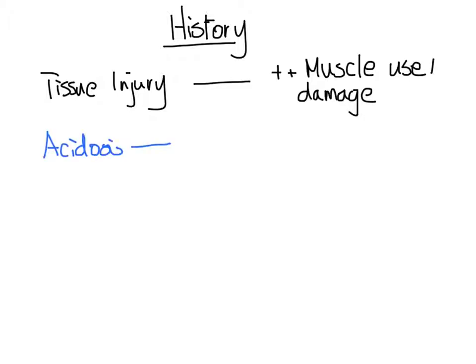If the patient truly has hyperkalemia, these are the items you want to hit on history. Whether they had any history of tissue injury, whether they had any trauma, burns, and intense physical activity. For acidosis, we want to ask patients about whether they have any symptoms or causes for metabolic acidosis, for example DKA or sepsis.